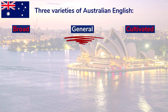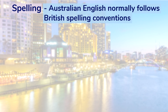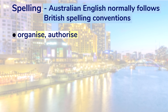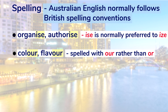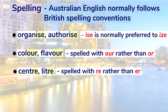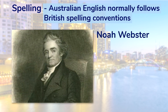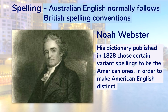Most examples from this point will be general Australian English. Australian English normally follows British spelling conventions rather than American. Words like 'organize' and 'authorize' use the ISE spelling; words like 'color' and 'flavor' are spelled with OUR; words like 'center' and 'liter' are spelled with RE. The reason American English uses different spellings is because of Noah Webster, whose dictionary published in 1828 chose variant spellings to make American English distinct — specific to the US, so it didn't affect Australia.